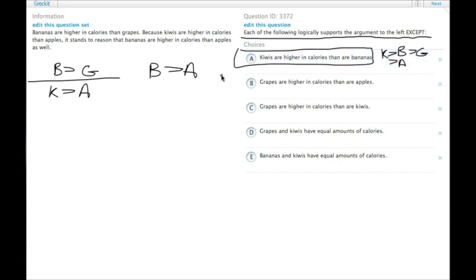Since this one often gives people trouble, I'll just show you the rest of them. This one tells us that grapes are higher than apples. We know that bananas are higher than grapes, and if we find out that grapes are higher than apples, then we have the B is greater than A.